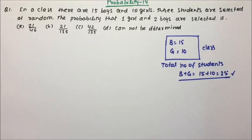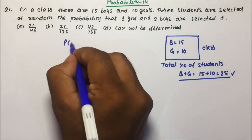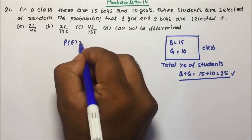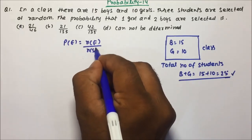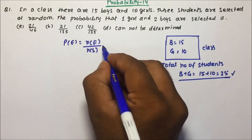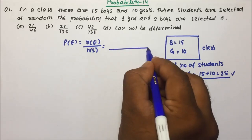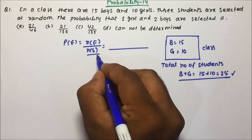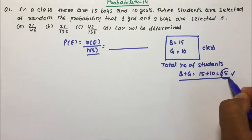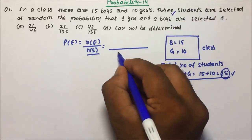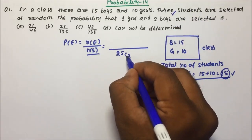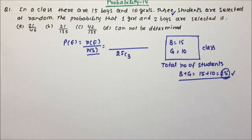Now, 3 students are selected at random. Basically we have to calculate probability. Probability will always be equal to Ne by Ns. If we talk about Ns, Ns will be nothing but — total 25 students are there and 3 students are selected at random — so Ns = 25C3. Out of 25 you are selecting 3, so we will use combination; C is the selection.